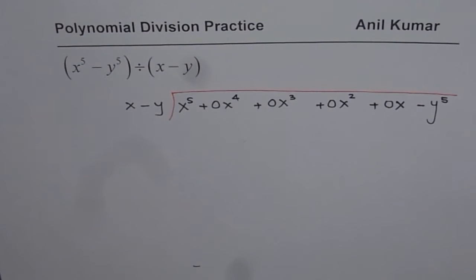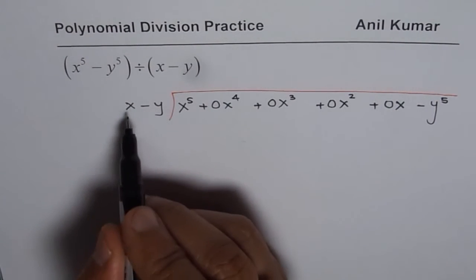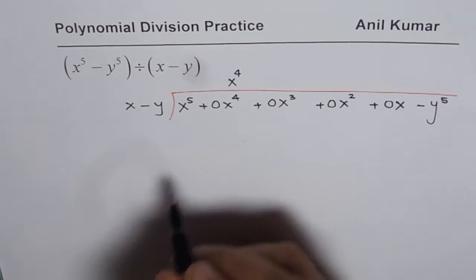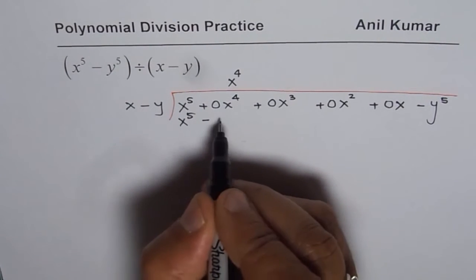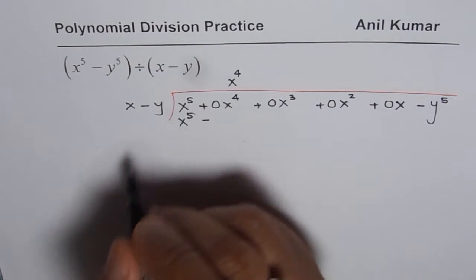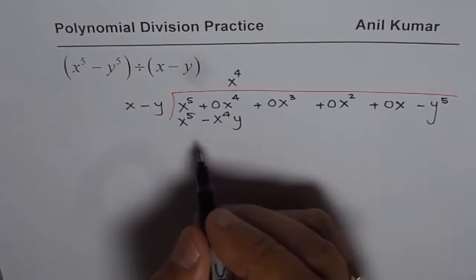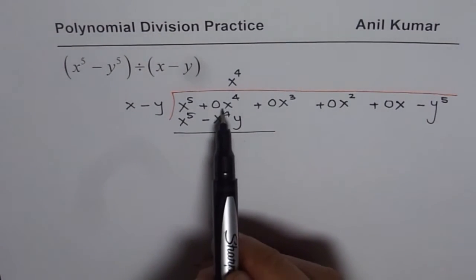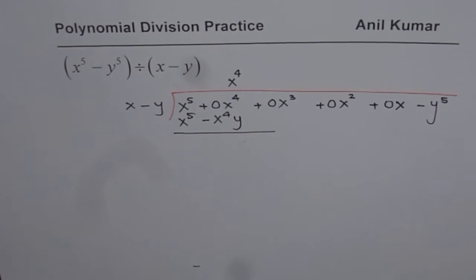Now let's start the division process. The first step is to take care of two terms. We have x to the power of 5, so we multiply by x to the power of 4 in the quotient. When you multiply you get x to the power of 5 minus x to the power of 4y.